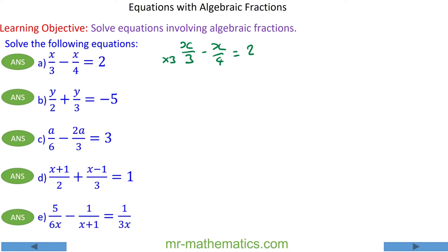First of all, the opposite of dividing by 3 is times by 3, so I need to multiply every term by 3 and these 3's will cancel. So I'm left with x minus 3x over 4 is equal to 6.